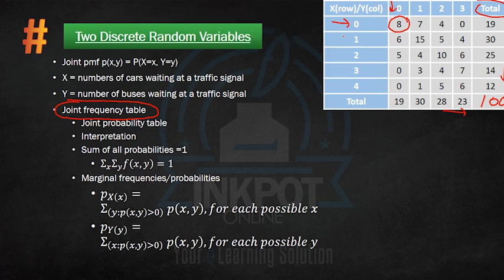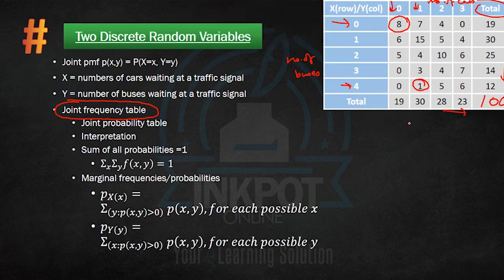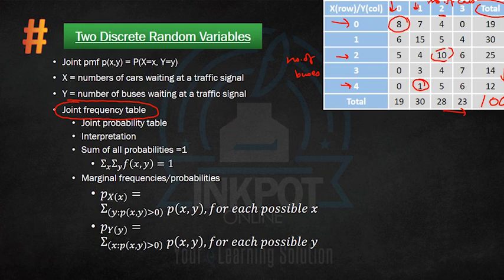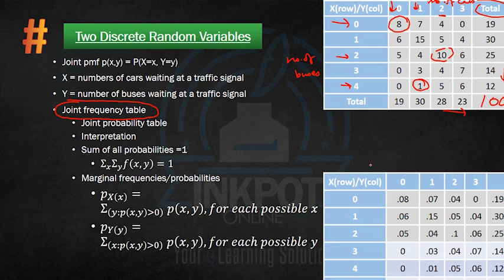Out of 100 days, on 8 days no bus and no car was waiting at the traffic signal. The columns indicate the number of buses and the rows indicate the number of cars waiting. On one day, four buses and one car were waiting; on ten days, two buses and two cars were waiting, and so on. This joint frequency table tells us the frequencies with which each combination of the random variables occurs, from which we can derive the joint probability table.